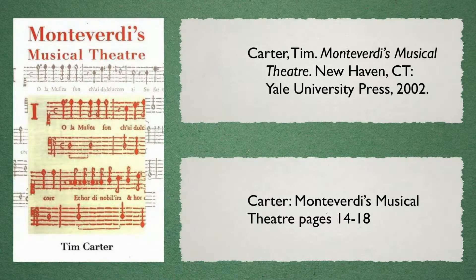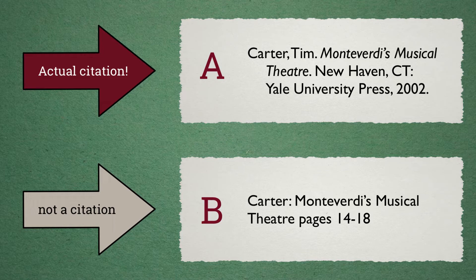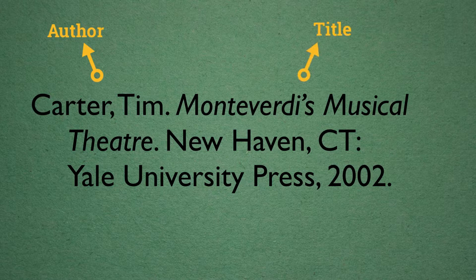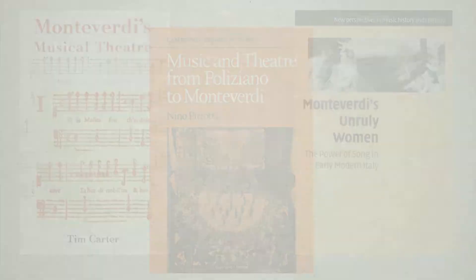What are citations? Take a look at these two examples. Can you tell which is a citation? Example A is the citation. Example B is merely an informal note a student might make when researching a topic. Citations are more than just notes about sources you find. They tell the reader, in a very specific way, where you got ideas and information from. Citations allow readers to retrace your research steps and get to the sources you used. Citations are a critical part of the research process.